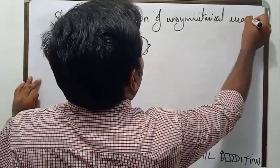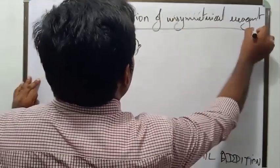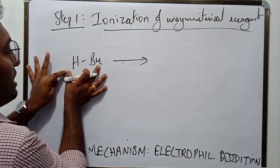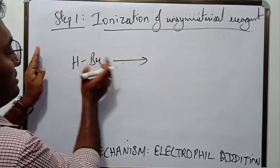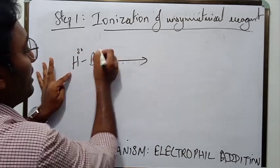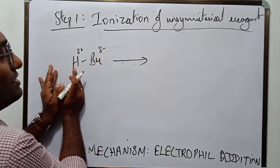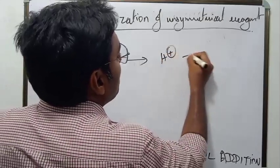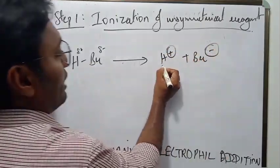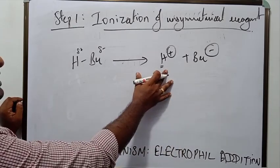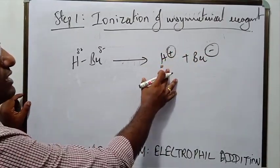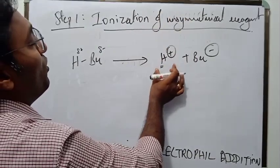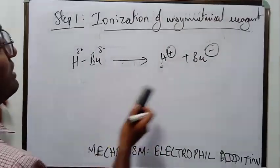What is the unsymmetrical reagent that we have used? HBr. As discussed, HBr has a sufficient dipole — H is always electropositive and Br is always electronegative — therefore they are bound to dissociate and H+ is bound to be released. H+ is an electrophile. The electrophile has been formed. Do you think it would remain idle? No — it would attack the electron-rich compound, which we will see in step two.